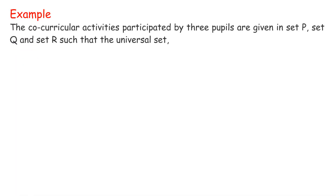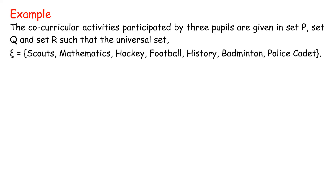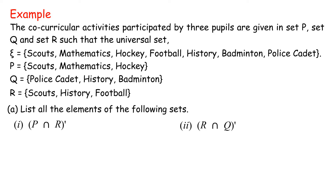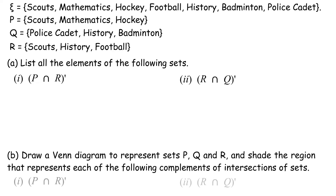Example. The co-curricular activities participated by three pupils are given in set P, set Q, and set R such that the universal set equals {Scouts, Mathematics, Hockey, Football, History, Badminton, Police Cadet}. P equals {Scouts, Mathematics, Hockey}, Q equals {Police Cadet, History, Badminton}, R equals {Scouts, History, Football}. Part A: List all the elements of the following sets. Part B: Draw a Venn diagram to represent sets P, Q, and R, and shade the region that represents each of the following complements of intersections of sets. 1. Complement of P intersect R.